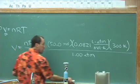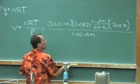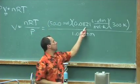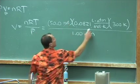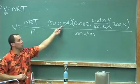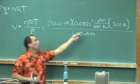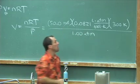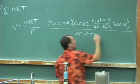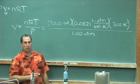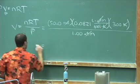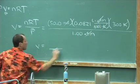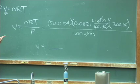But first, let's see if our units work out. This constant has some interesting units, but things will work out nicely. Our moles cancel — moles up top, moles in the denominator. Kelvins cancel. Atmospheres cancel. When we're finished, we're left with one unit — liters — and that's appropriate for volume.